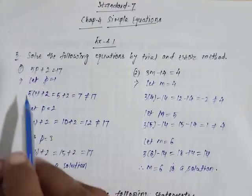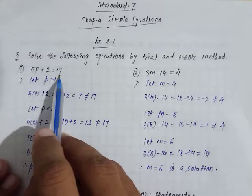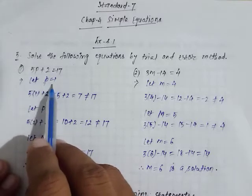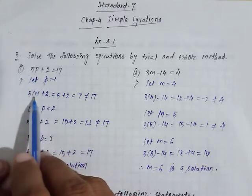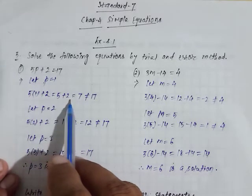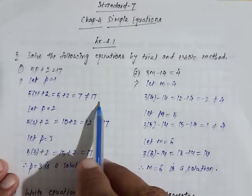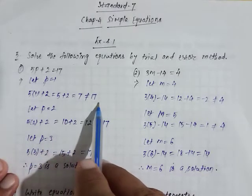Let's see. 5p plus 2 is equal to 17. First of all, we will start with the number 1. Let p is equal to 1. Put p equals 1 in the equation. This is 5 into 1 plus 2, which equals 5 plus 2 equals 7, which is not equal to 17.